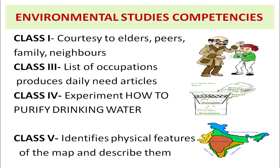The third competency is environmental studies competency. For class 1, if a student is showing courtesy to elders, peers, family members, and neighbors, then they have environmental studies competency. For class 3, a student can list the occupations that produce daily need articles. For class 4, if a student is able to do a simple experiment on how to purify drinking water, then they have environmental studies competency. For class 5, if a student is able to identify and describe the physical features on a map, then they have environmental studies competency.